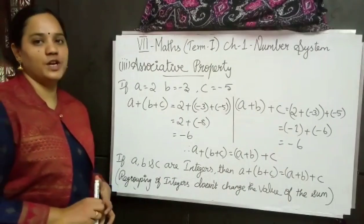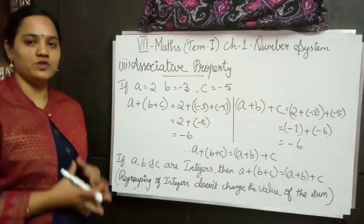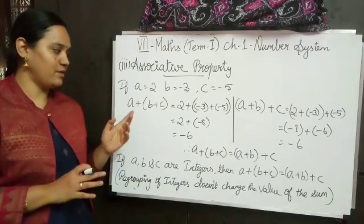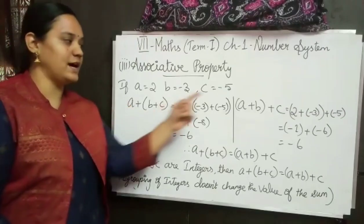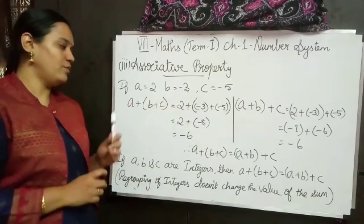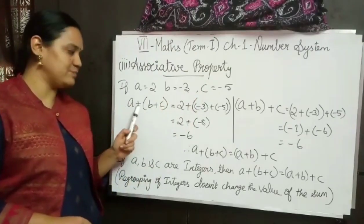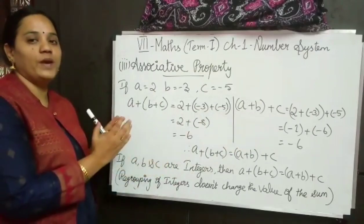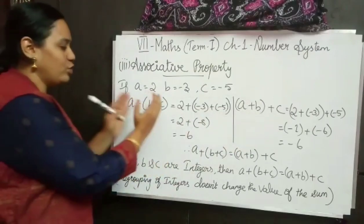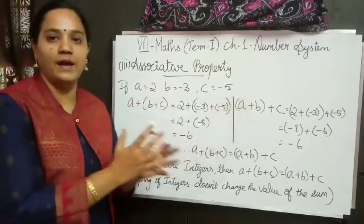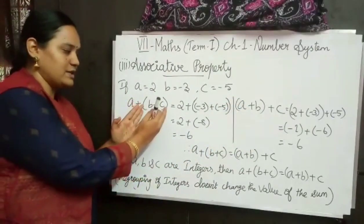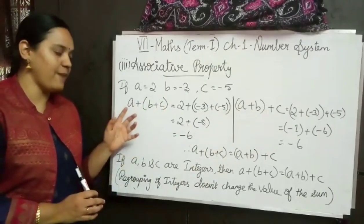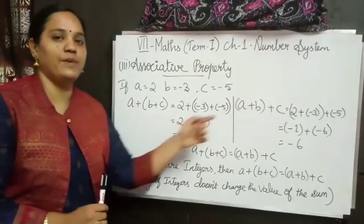So now associative property. Whenever we have associative property, it deals with three integers: a, b and c. Here I have taken a as 2, b as minus 3 and c as minus 5. First I found out the value for a plus (b plus c). Here the only difference is the grouping of integers is different — here I grouped b and c together, and here I grouped a and b together. So now I am going to find out the value for a plus (b plus c) and (a plus b) plus c.